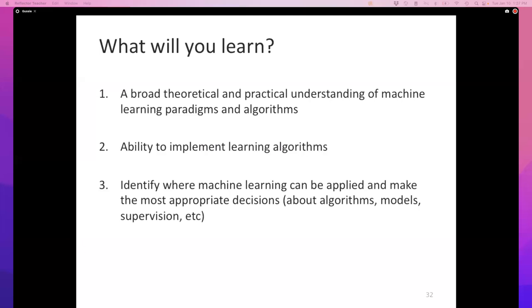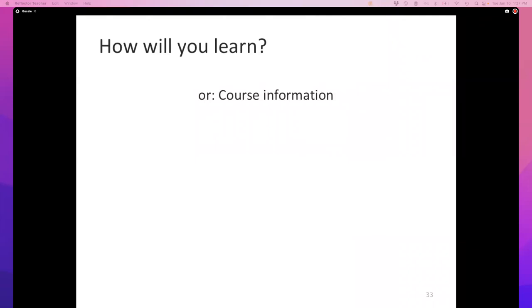Along the way, you'll pick up the ability to identify when machine learning can be applied and when it cannot, and you'll know what appropriate decisions to make about algorithms, models, supervision, and features. You'll also have the right experimental protocol for how to apply machine learning. This class officially ends at 1:45. So now, if there are no more questions, I'm going to jump into the more boring part — which is course information, logistics, and such things.